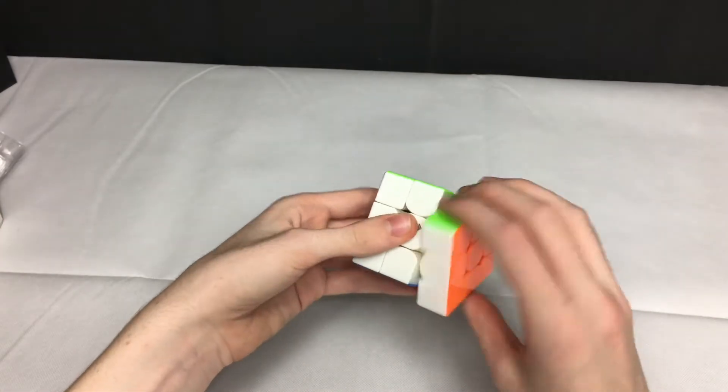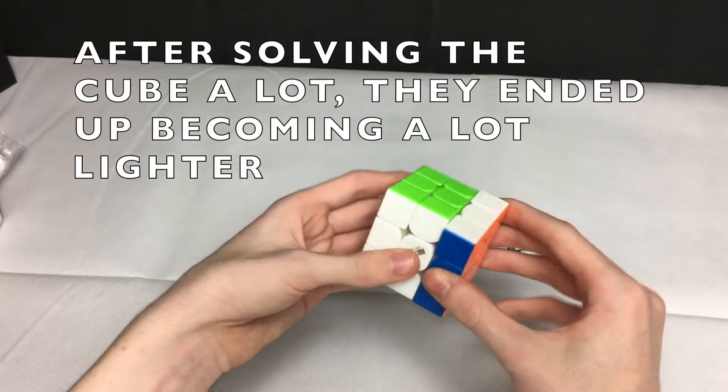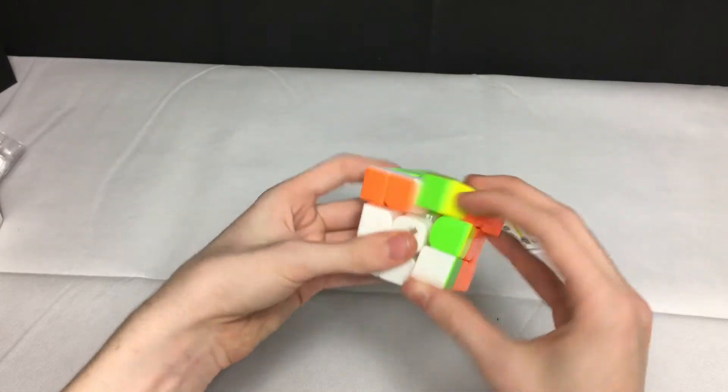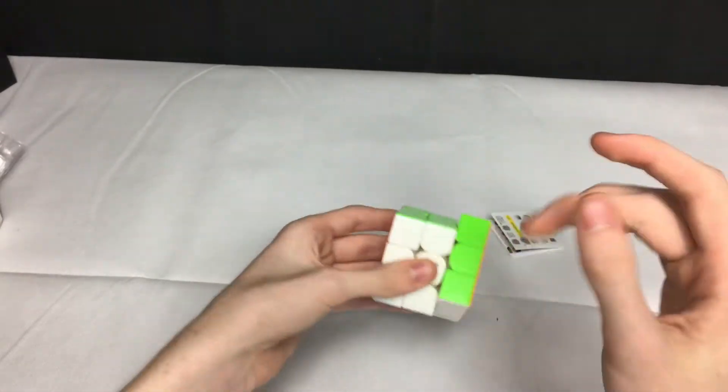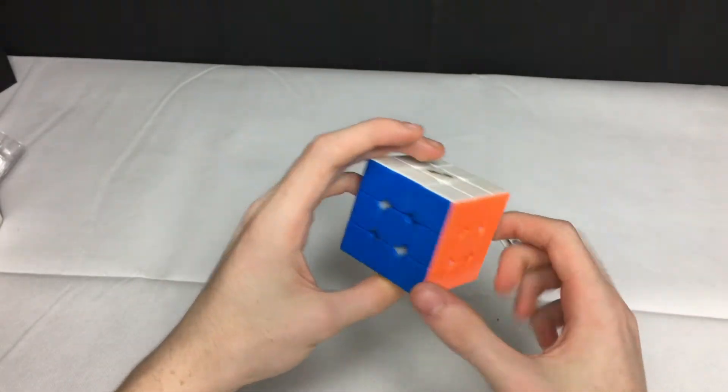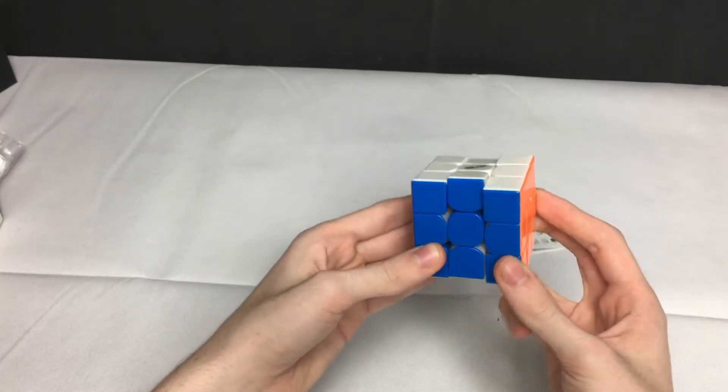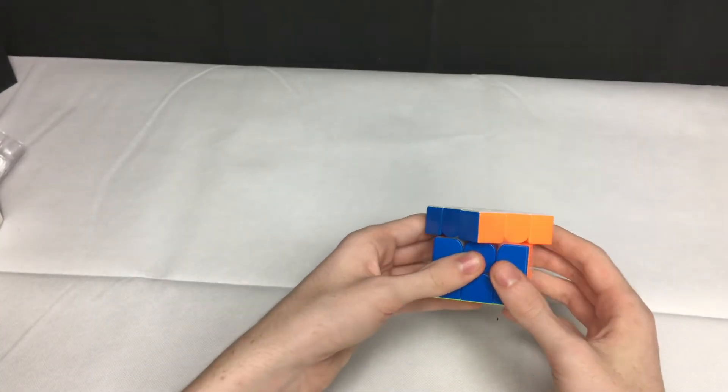I can definitely feel the magnets in there and they are about just as strong as the Mr. M magnets, which you might have remembered in my other video. But it does feel a lot better than the version 2, and if you guys are using the version 2 right now, you should get the version 3. It's definitely better. Middle layer turns pretty well. Let's just go ahead and see how good the corner cutting is on this cube.